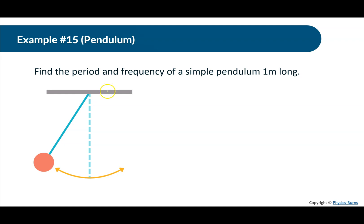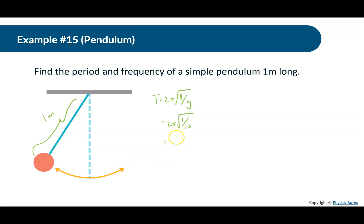Example number 15: find the period and frequency of a simple pendulum one meter long. The formula is T = 2π√(L/g). The length is one meter and we're assuming we are on Earth, so 2π√(1/10). We get 1.99 seconds — that is the period. Frequency is equal to the inverse of period, so 1/1.99 gives us 0.5 hertz.